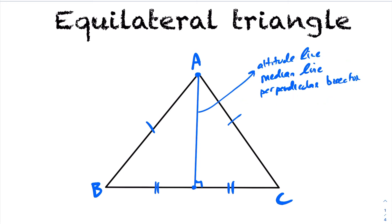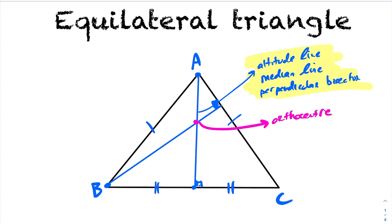The same argument applies to altitude line B — it would also have the added property of being all three: an altitude line, a median line, and a perpendicular bisector. Which means when you intersect these two lines, that intersection point is the orthocenter (intersection of altitude lines), but also the centroid (intersection of median lines), and also the circumcenter. So when you have an equilateral triangle, the orthocenter, centroid, and circumcenter are all the same point, and therefore the Euler line in this case would not exist.